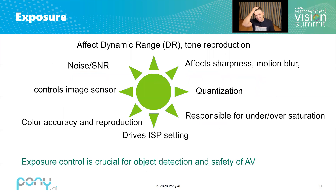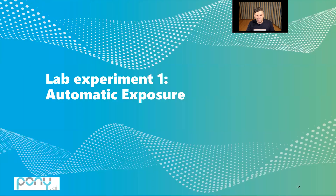It's important to highlight that exposure control is critical and crucial not only for photography but for object detection, because it affects all areas of image quality. Almost all aspects are controlled and driven by the exposure control. So let's go to the lab and do a simple experiment with automatic exposure.